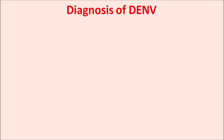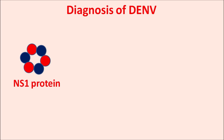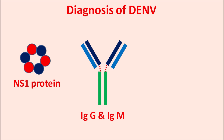Now let us see the diagnosis of dengue virus. We can identify the dengue virus in the infected person by different types of blood tests. First, we can identify the NS1 protein. Similarly, we can identify antibodies such as IgG and IgM specific to the dengue virus. Finally, we can also identify the genetic material of the dengue virus by using RT-PCR — reverse transcriptase polymerase chain reaction.